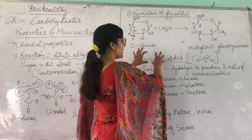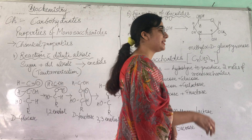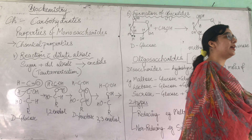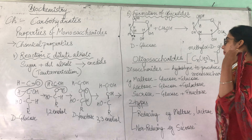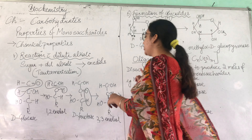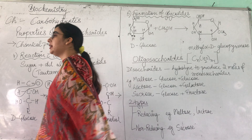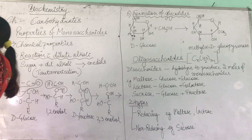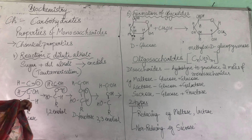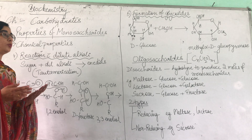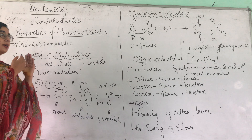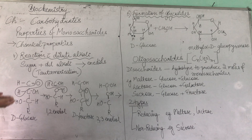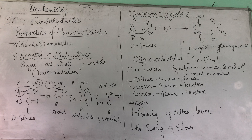Oligosaccharides are basically the carbohydrates that produce 2 to 10 moles of monosaccharides on hydrolysis. It means if we take an oligosaccharide and do hydrolysis, then 2 to 10 moles of monosaccharide molecules are produced.